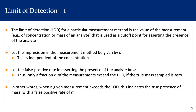Another parameter that describes measurements is the limit of detection. The limit of detection, or LOD, for a particular measurement method is the value of the measurement — for example, the concentration or mass of an analyte — used as a cutoff point for asserting the presence of an analyte. If the LOD of a chemical is one part per million, anything less than that is indistinguishable from zero, and is treated as if the analyte did not exist.